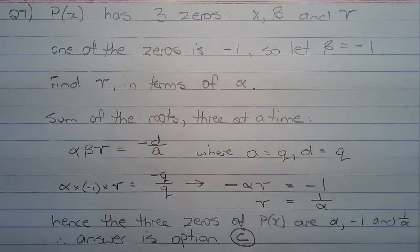Solving for γ, we get γ = 1/α. Hence the three zeros of P(x) are α, -1, and 1/α. Therefore the answer is option C.